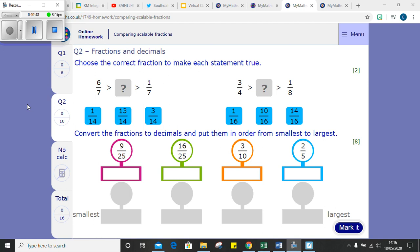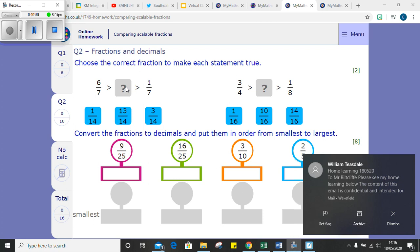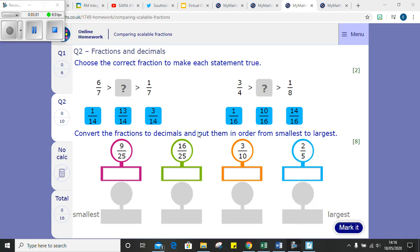Right, look at the first set of these questions on page two. So choose the correct fraction to make each statement true. So you want something that's less than six-sevenths, but greater than one-seventh. So how can you figure out that number to be in there? I'd convert these sevenths into fourteenths, and then you should be able to place the right number in there. Same over here. Remember, convert your denominator so they're all the same. Convert the fraction, then you can compare the fraction.